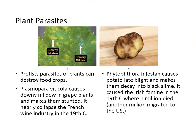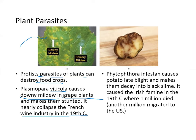Some protists also function as parasites of plants and can destroy food crops. Plasmopara viticola causes downy mildew — light spots on grape plants making them stunted — and nearly collapsed the French wine industry in the 19th century. Phytophthora infestans causes potato late blight, making them decay into black slime. This was the cause of the Irish famine in the 19th century, where one million died and another million migrated to the US.